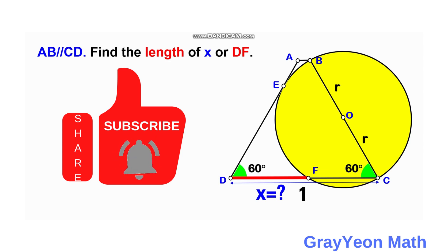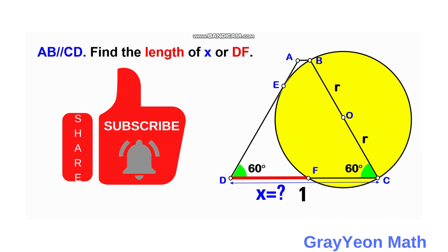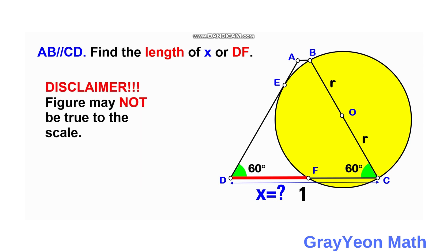The base angles are 60 degrees horizontal, and 60 degrees with the sides on the left and right. The length of the base of this trapezoid is 1 unit, and we are required to find the length X, or DF. AB is parallel to CD. Note: the figure may not be true to scale.